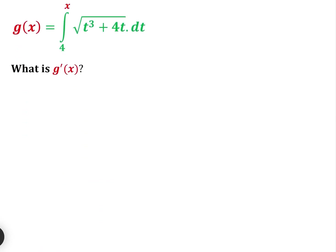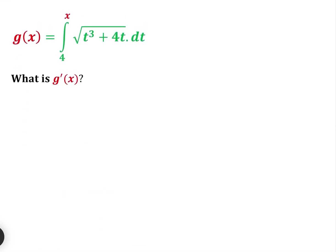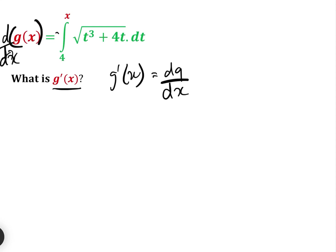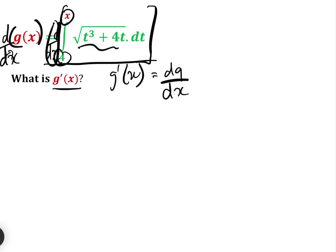Let's have a look at the next question. Here g(x) is the integral between x and four of the square root of (t³ + 4t) dt. We're almost at the point where we can use the fundamental theorem of calculus. It asks us what g'(x) is. g'(x) is the same thing as dg/dx, so let us differentiate dg/dx. We differentiate the other side as well, and then we have our fundamental theorem of calculus. So the answer is simply replace the t's with x, which gives the square root of x³ plus 4x.